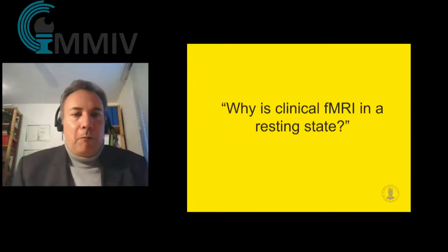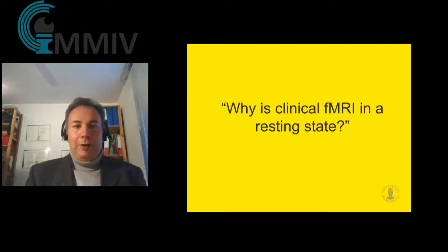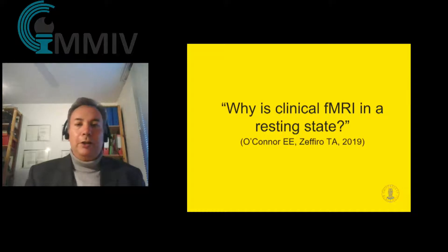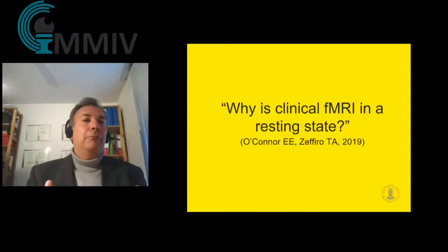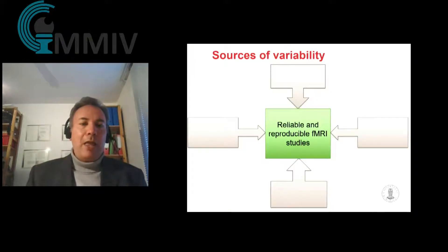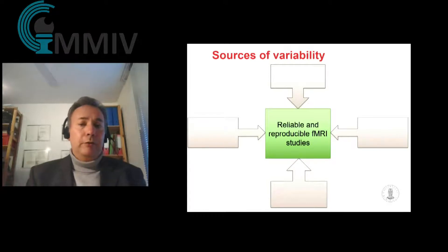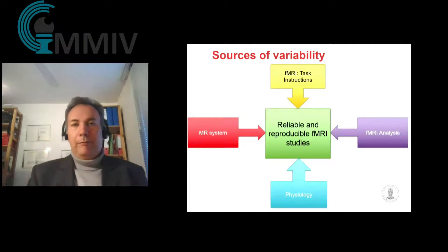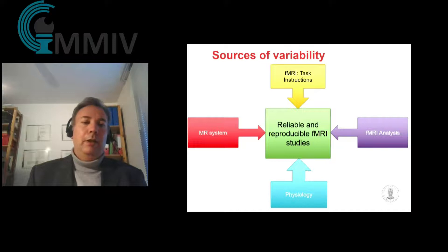So why is clinical fMRI still in a resting state? That's not a quote I invented — it's actually the title of an article published last year asking basically these same questions. To understand the problem of clinical fMRI and its high variability, you've probably also heard about the replication crisis. I tried to summarize this into four different sources of variability that we face in doing fMRI.